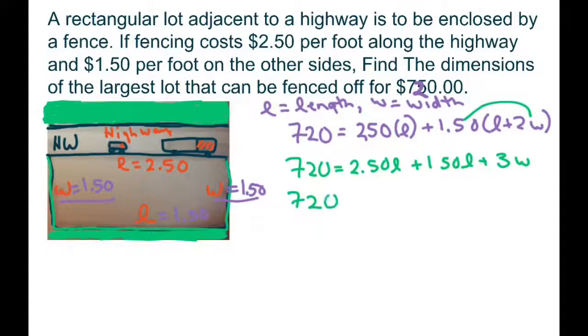So $7.20 equals $4.00 per length plus 3W.